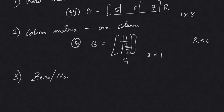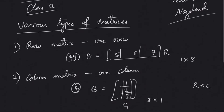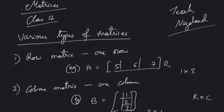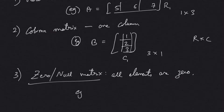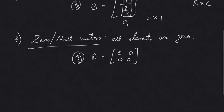The third matrix is called a zero or null matrix. A zero matrix or null matrix is that matrix in which all elements are zero. It can be of any order — for example a matrix A where all the elements are zero. This matrix is called a zero matrix, sometimes denoted by the letter O.